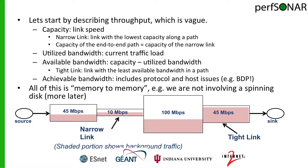This means that for this entire length of network, the fastest we can expect to get — if there was no other traffic occurring at the exact same time — would be 10 megabits per second. This is our bottleneck. So the capacity of our end-to-end path is really the capacity of our narrowest link.